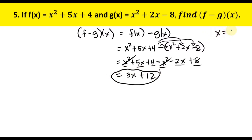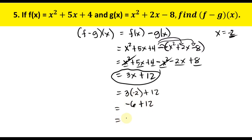What if x equals negative 2? Substitute into 3x plus 12: 3 times negative 2 plus 12 equals negative 6 plus 12, which equals 6. So when x equals negative 2, the answer is 6. If no value of x is given, the final answer is 3x plus 12. That's all for this tutorial.